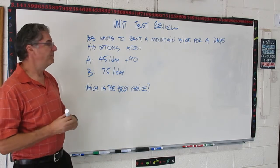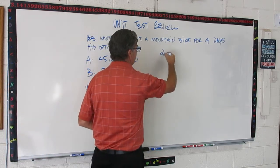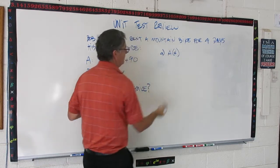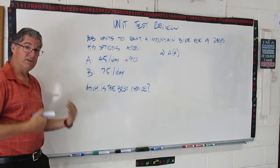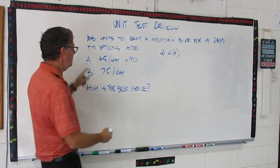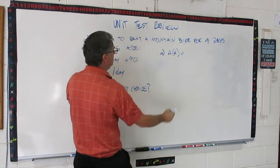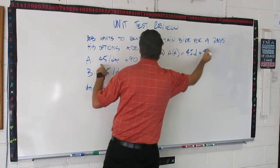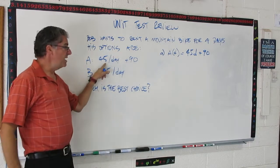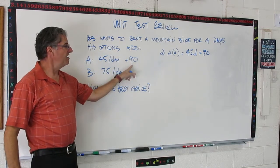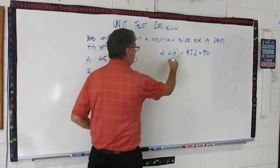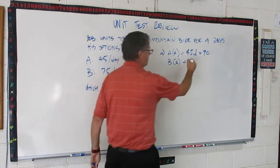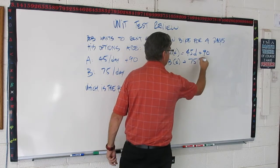So, the first step is write the functions. So, A of days, right, that's our independent variable. We get to choose how many days we rented. Option A for days is going to be 45D plus 90. This is option A. It costs $45 a day, but we also pay an upfront cost of $90. B of days is $75 a day, just a flat rate per day with no upfront. So, that's $75 a day. Okay?